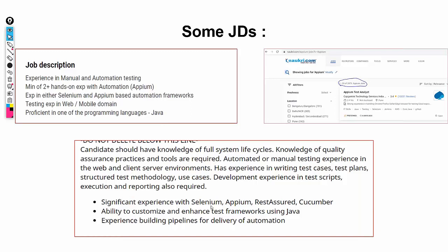Job descriptions also mention Cucumber, Selenium, and Appium requirements together, along with the ability to customize or enhance frameworks and build delivery pipelines. When I talk about building delivery pipelines, we will see how to integrate Appium tests into CI/CD using Jenkins — and we cover that in the curriculum.